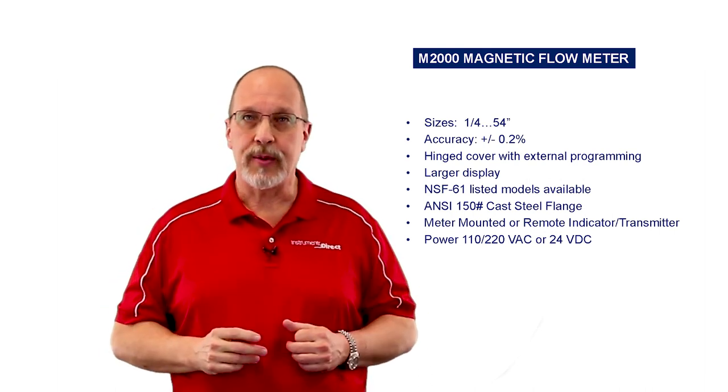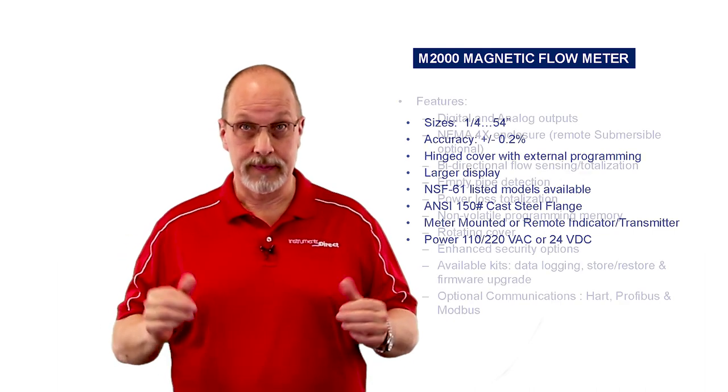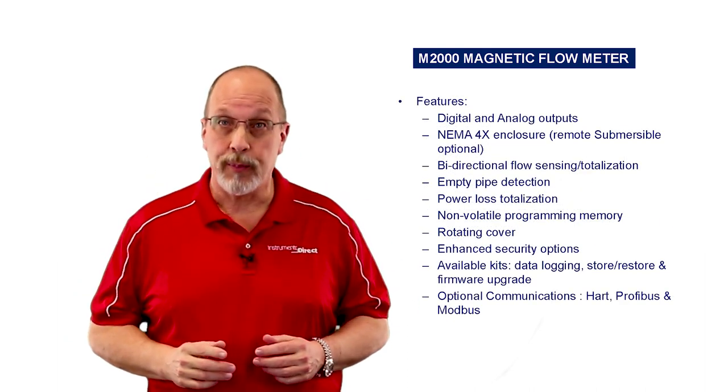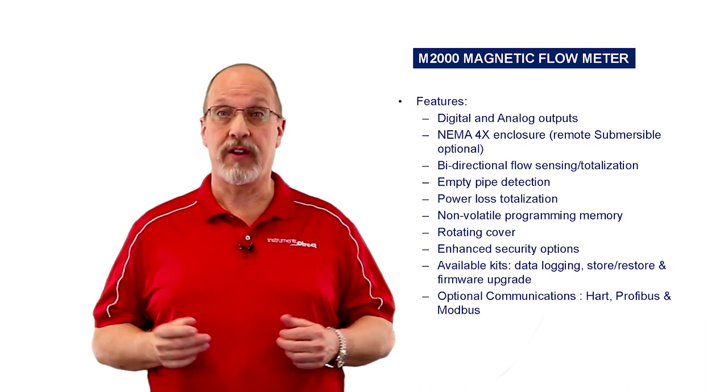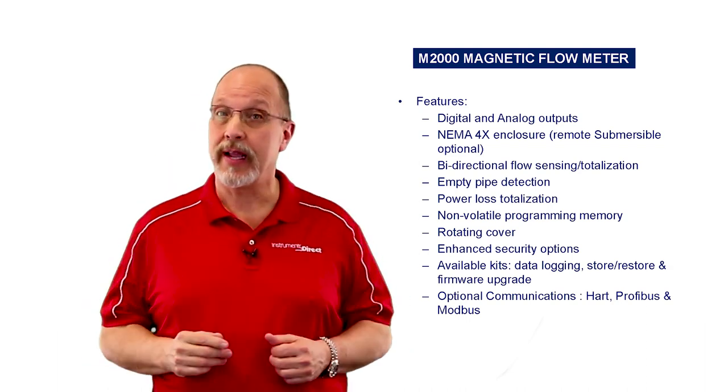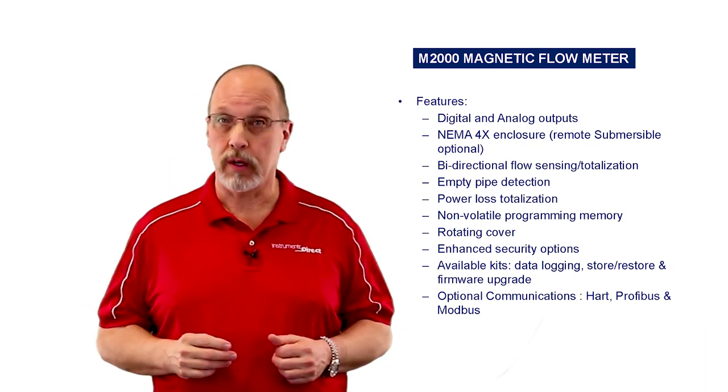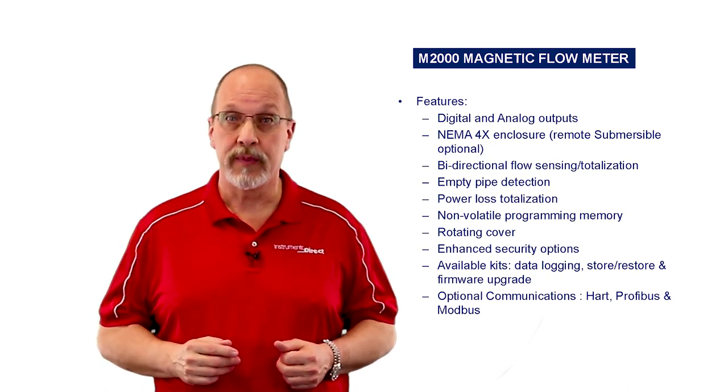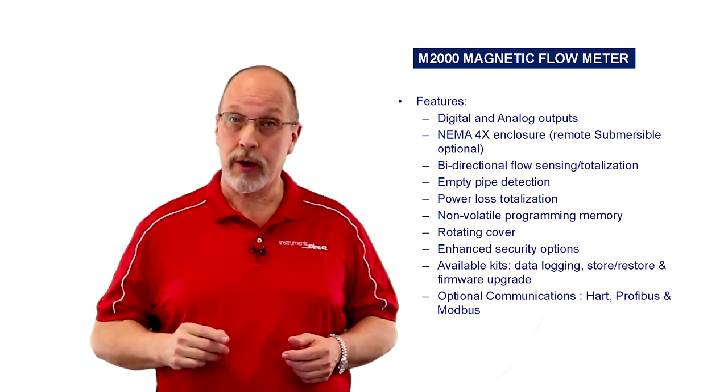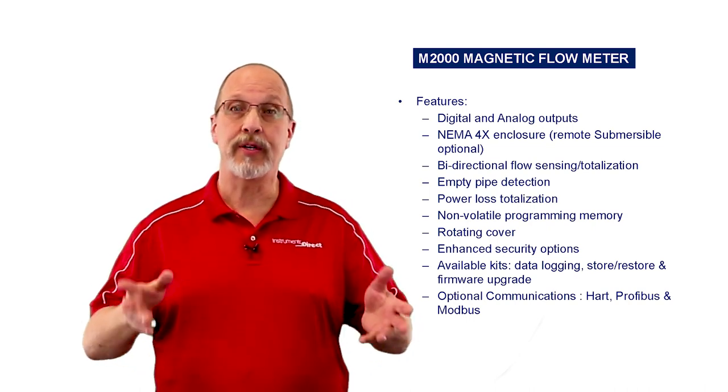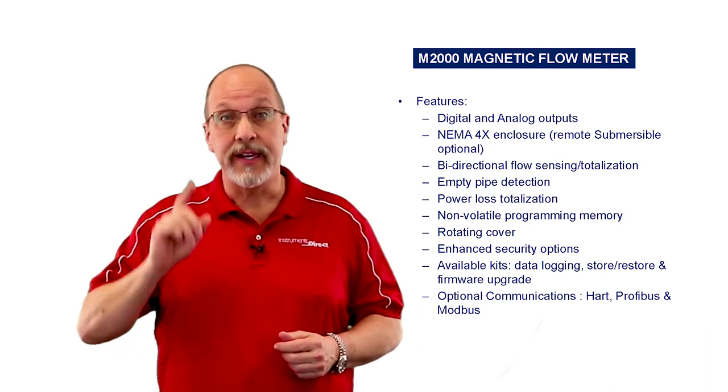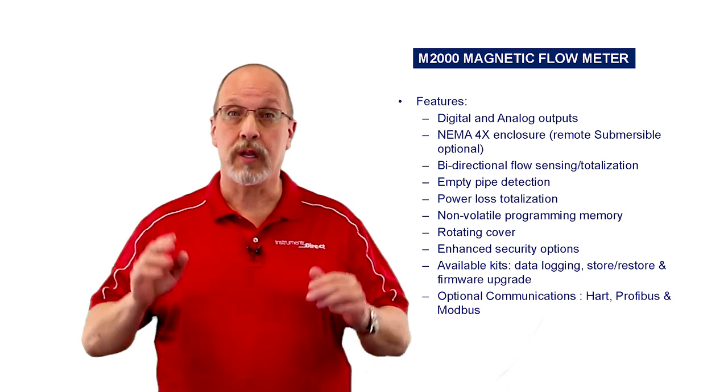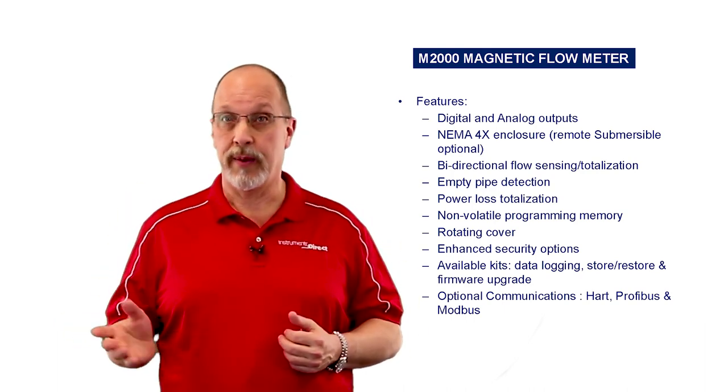Now the power, standard power is 110-220 VAC, or you can get the optional 24-volt VDC. It features digital and analog outputs, NEMA 4X enclosure with optional submersible remote transmitter. It can measure flow bi-directional, it has empty pipe detection, power loss totalization, it has a non-volatile memory, a rotating cover, enhanced security options, and it also offers a few option kits such as data logging, store and restore, and firmware upgrades. In addition, it also has some optional communication features such as HART, PROFIBUS, and MODBUS.